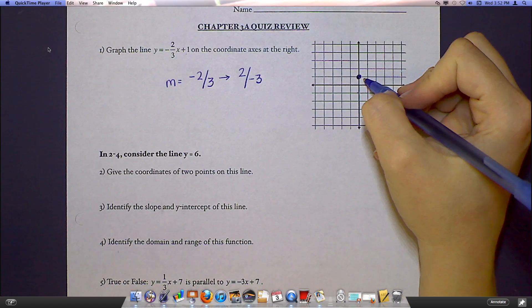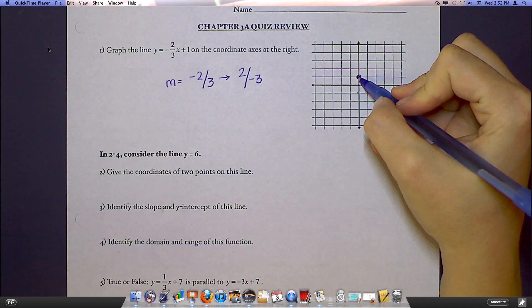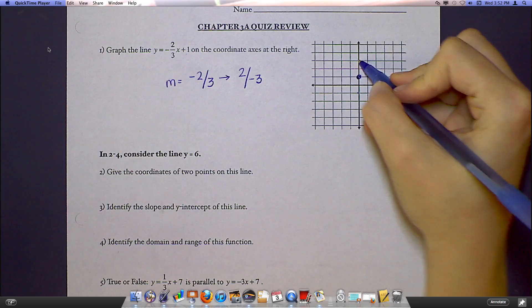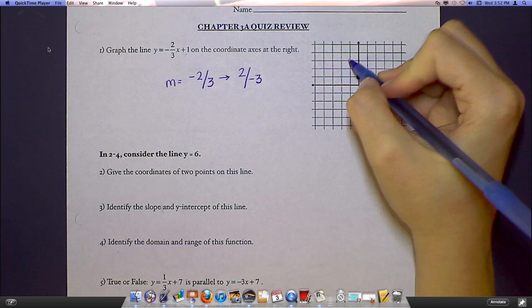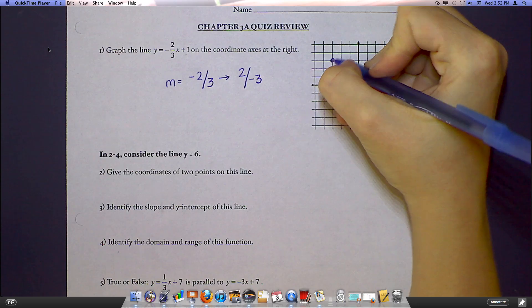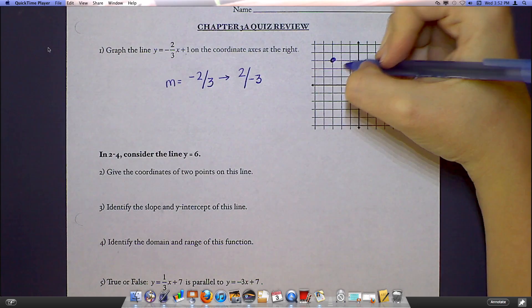So if that were the case, starting back at this one, I would have gone up two, but then since that's a negative three, I would have gone to the left three. Either way, you should end up with the same line. It should look something like this.